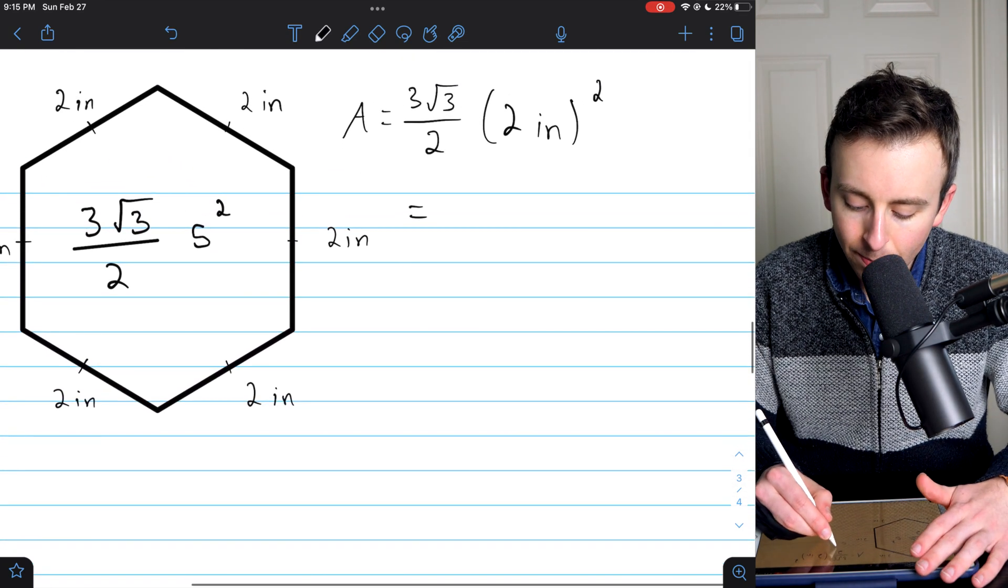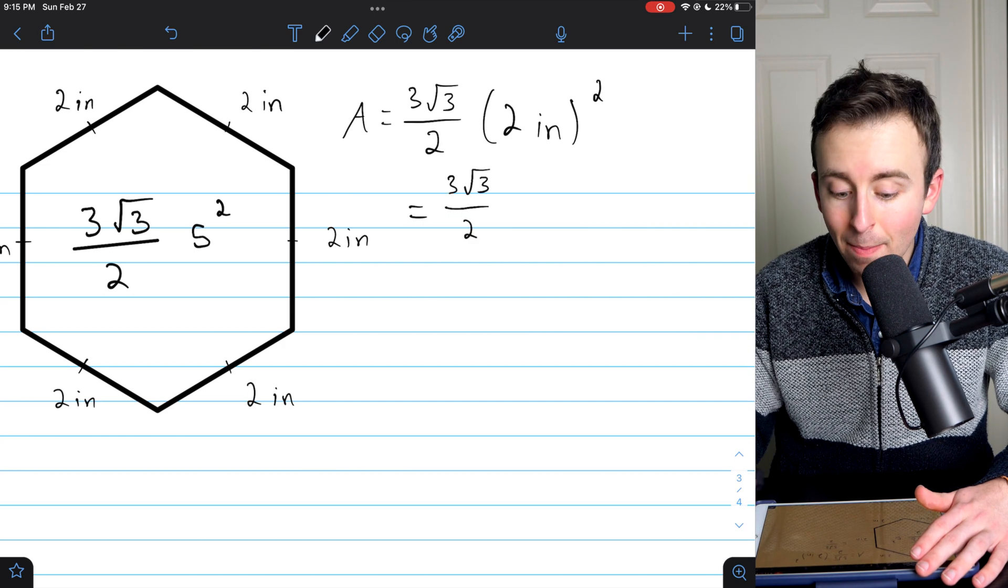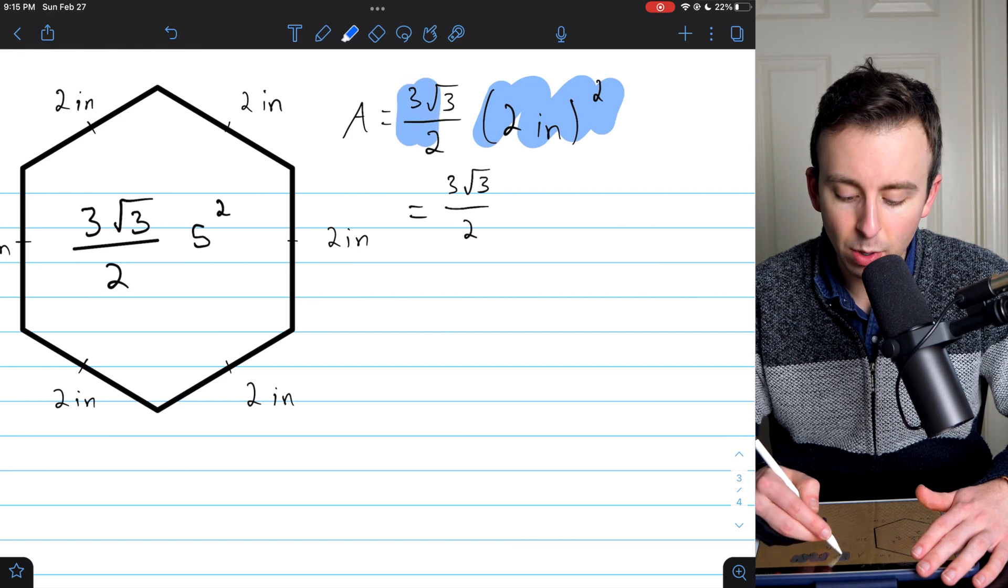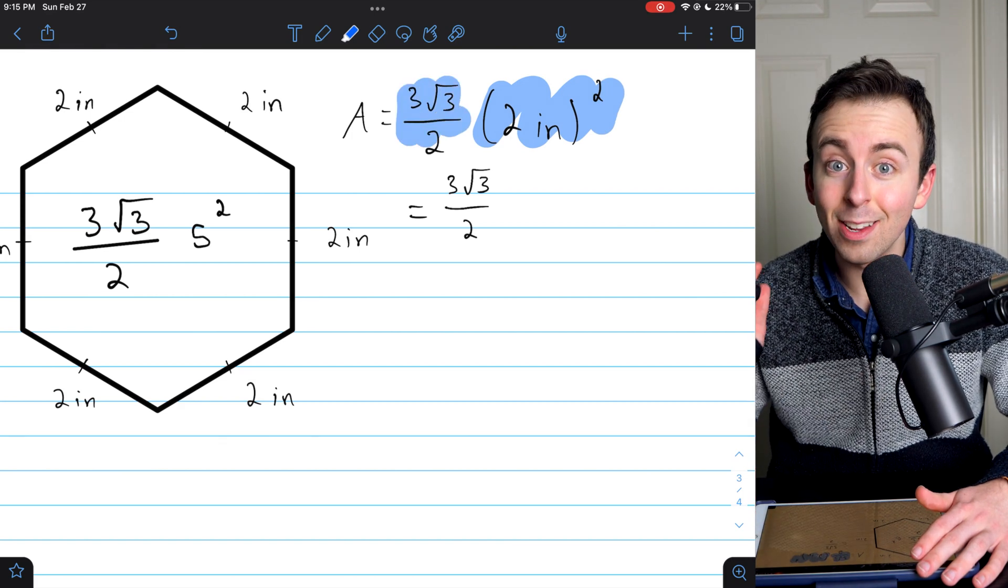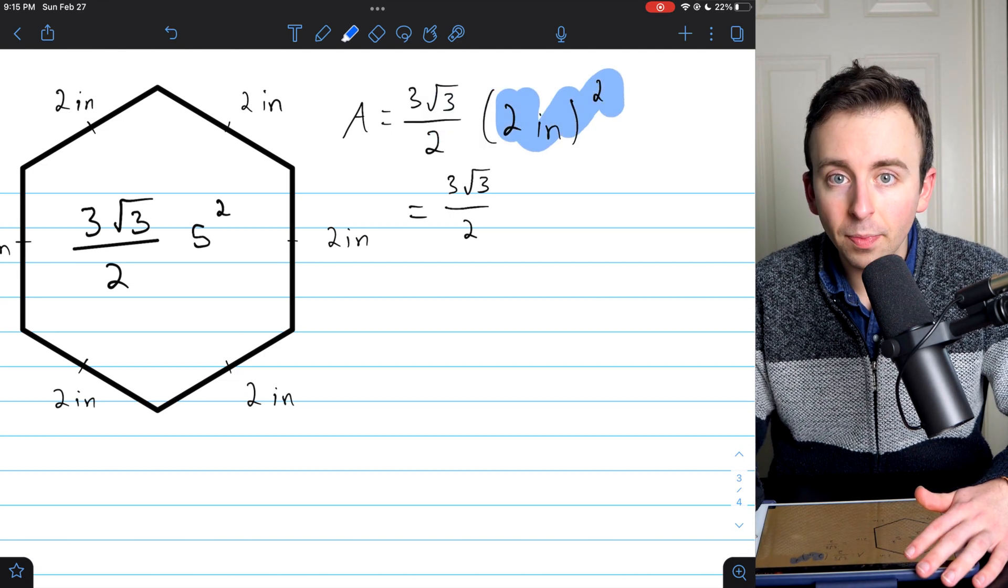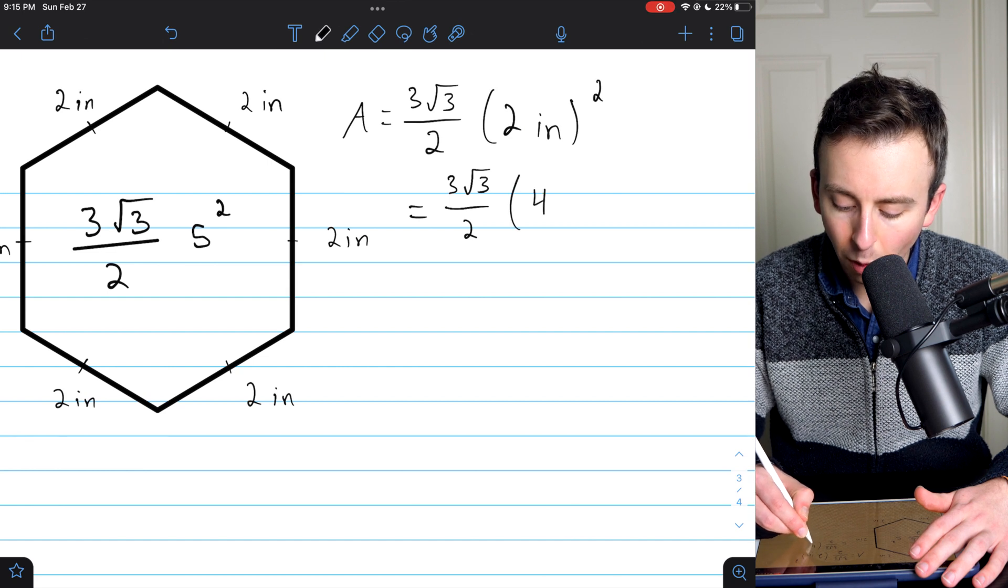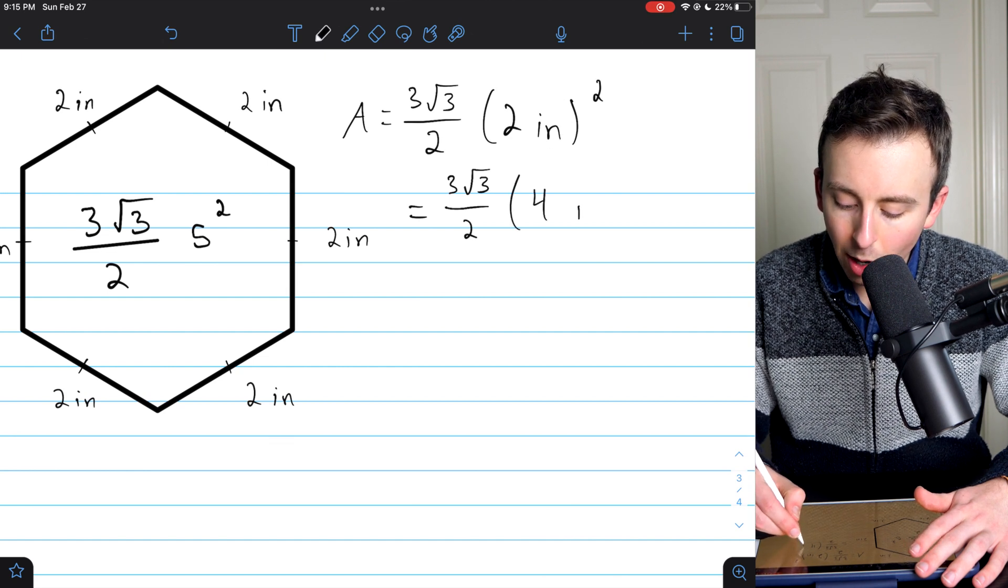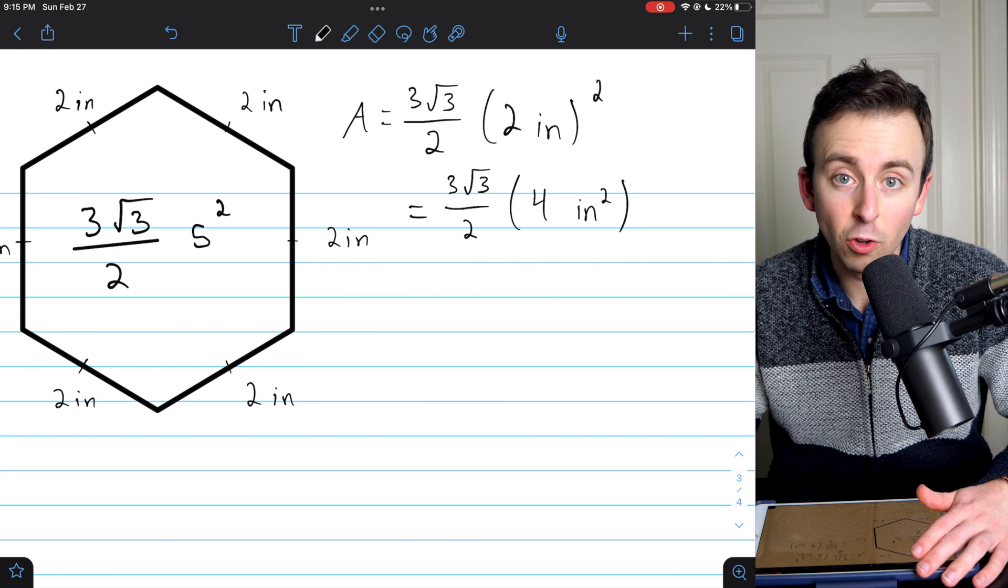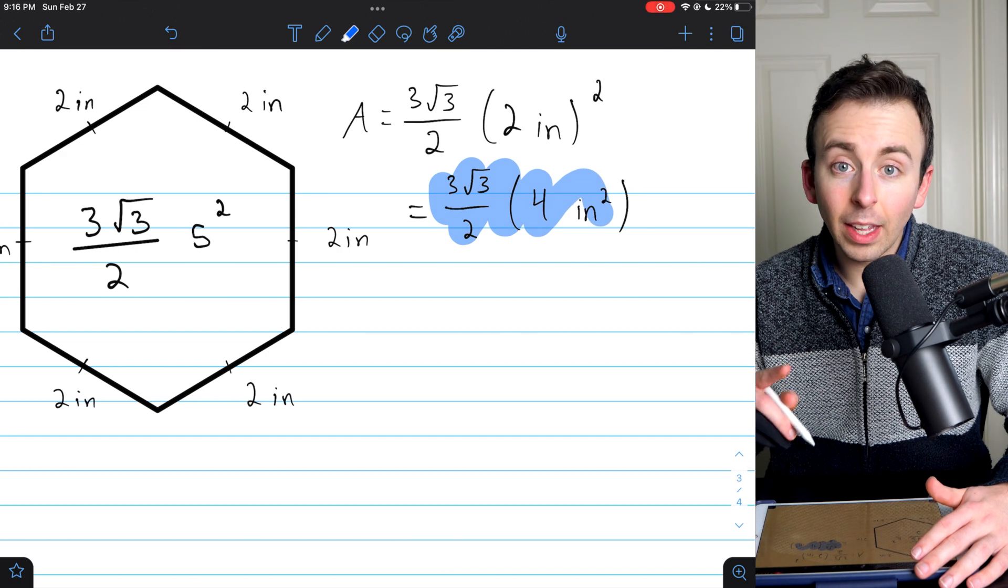Let's zoom in a little bit. We've got three root three over two. Remember, it's the side length that's squared. The three root three over two, that is not squared. So what is two inches squared? You've got to remember to square the two, which gives us four, and then we also have to square the inches to give us our proper area units, inches squared. Can we simplify this? Yes, we can.